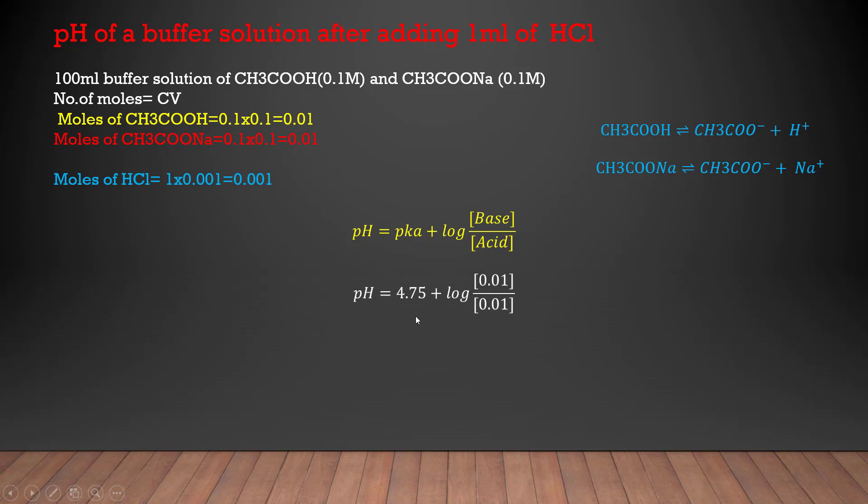So let's put in the data that we have at our disposal. The pKa value of acetic acid is 4.75. So let's put it into equation and the number of moles of acetic acid and sodium acetate have been inserted into it as well. So pH is equal to 4.75 plus log of 0.01 divided by 0.01.